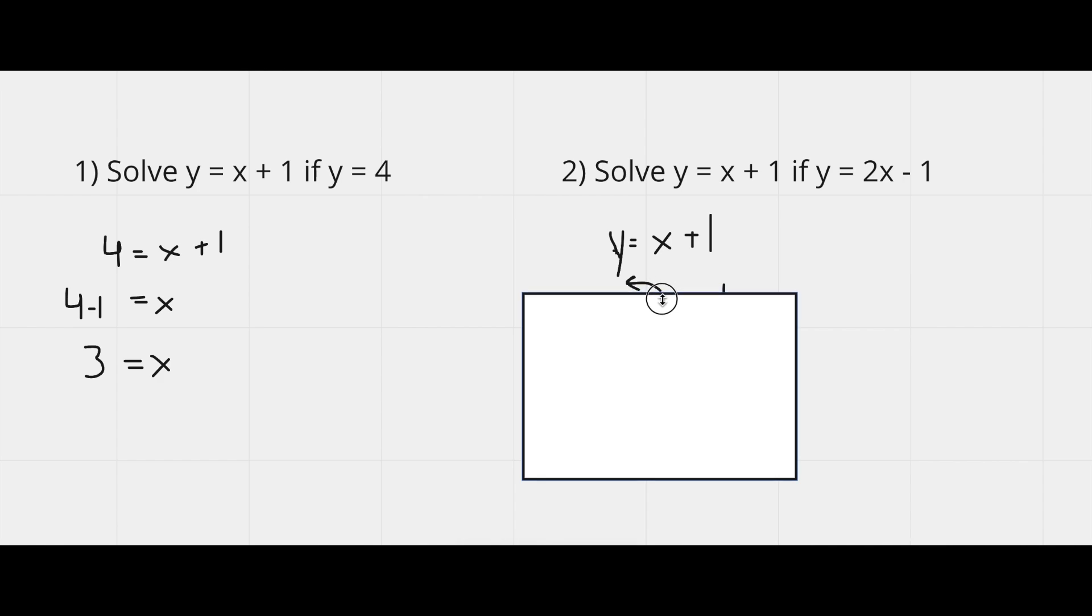And then we take the two x minus one, and we plug that in for y right here. So that becomes two x minus one equals x plus one.